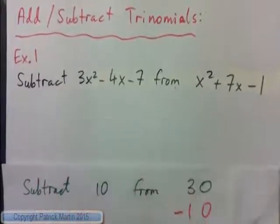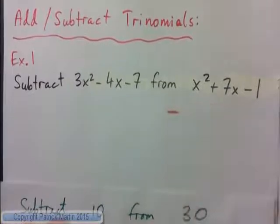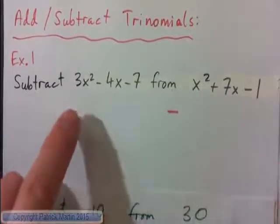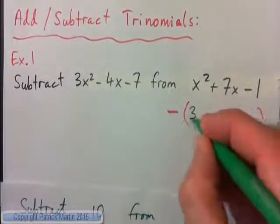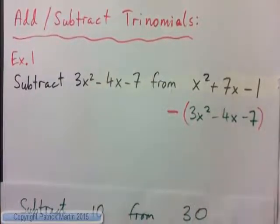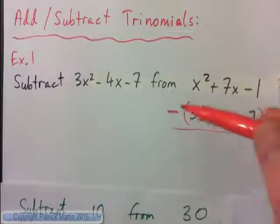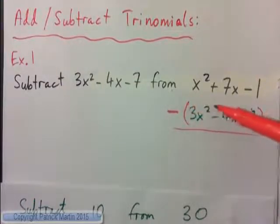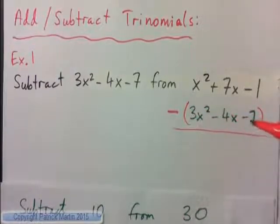So we're going to subtract this guy. This guy's being subtracted, so if we subtract him, you're going to subtract not just the 3x squared, but you've got to subtract the entire thing — the entire 3x squared minus 4x minus 7. You're subtracting the whole thing, and that means the subtract sign needs to be distributed to everything, because we're subtracting the 3x squared.